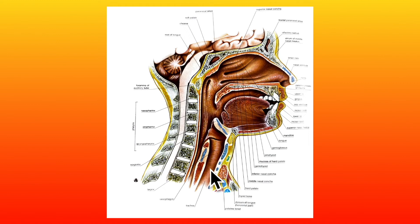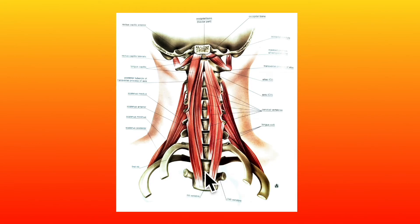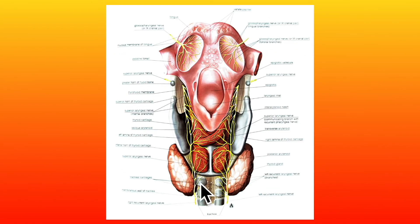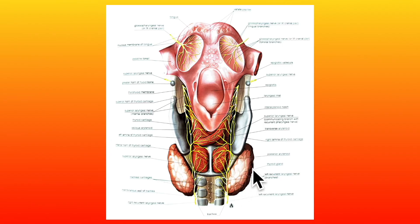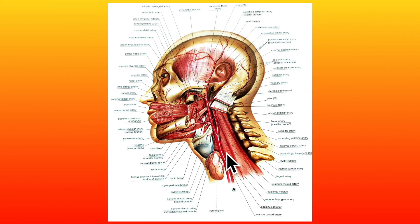Looking at the posterior relations of the trachea: in this diagram we can see the esophagus, which is the first posterior relation. The second posterior relation is the attachment of the longus colli muscle, visible here with the vertebrae. The third posterior relation is the recurrent laryngeal nerve, seen here in the tracheoesophageal groove. On each side, the trachea is related to the corresponding lobe of the thyroid gland and the common carotid artery within the carotid sheath.